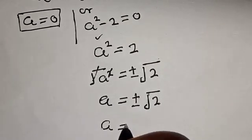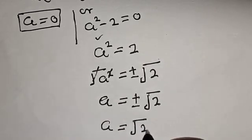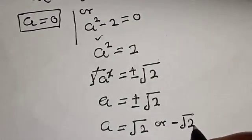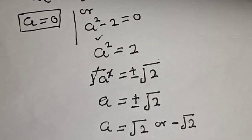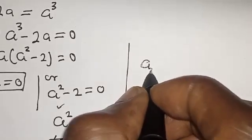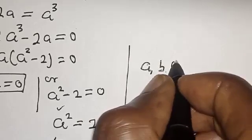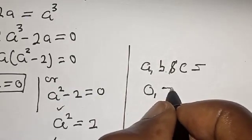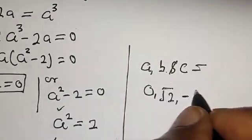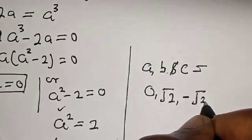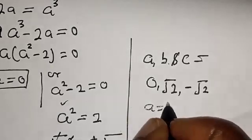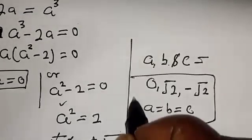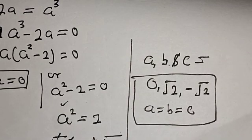Therefore our final answer is a equals b equals c equals zero, or root two, or negative root two. If you enjoyed the class, please don't forget to like, share, comment, and subscribe.